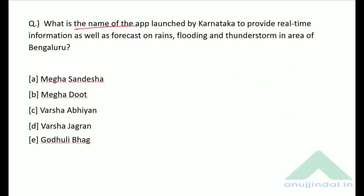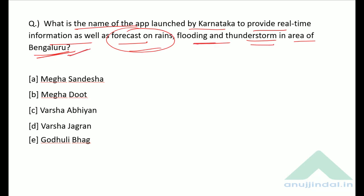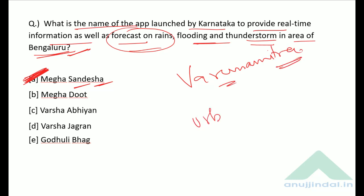What is the name of the app launched by Karnataka to provide real-time information and forecasts on rains, flooding, and thunderstorm in the Bangalore area? Karnataka launched an app called Mausam Sandesh. Additionally, a portal called Varun Mitra was also launched to manage and mitigate urban floods.